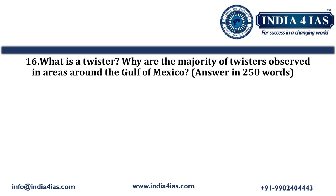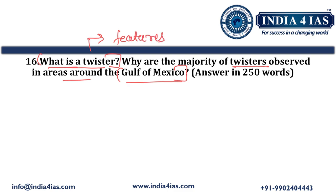Coming to question number 16: 'What is a twister? Why are the majority of twisters observed in areas around the Gulf of Mexico?' This question has two parts. The first part asks what a twister is — we have to define it and write its features. The second part asks why the majority of twisters are observed around the Gulf of Mexico. This question is for 15 marks and the word limit is 250.